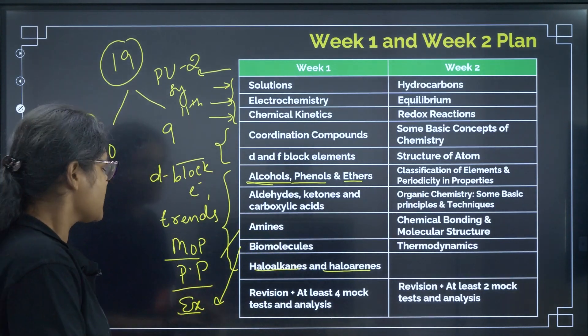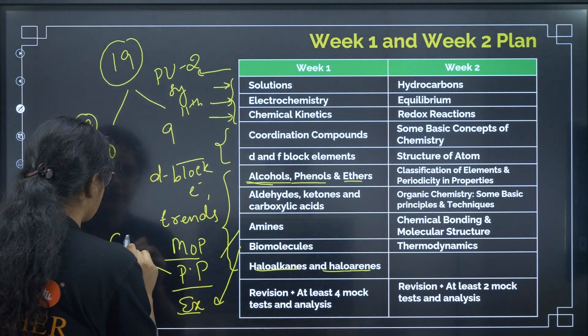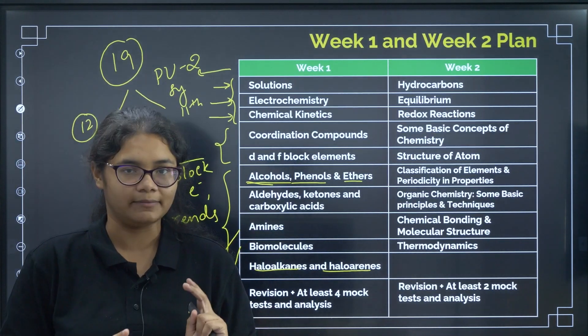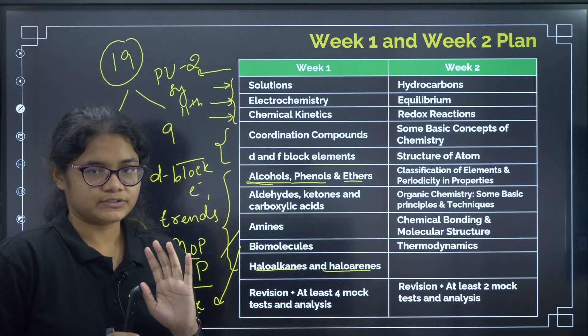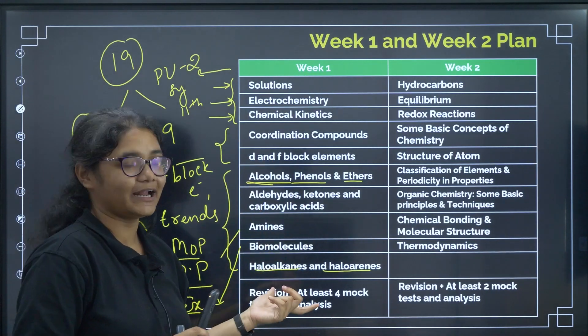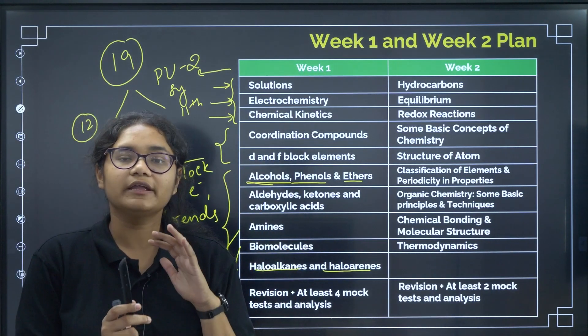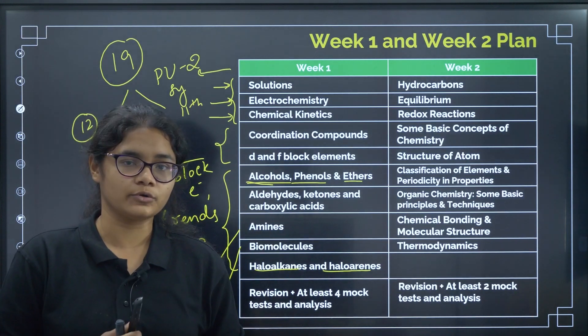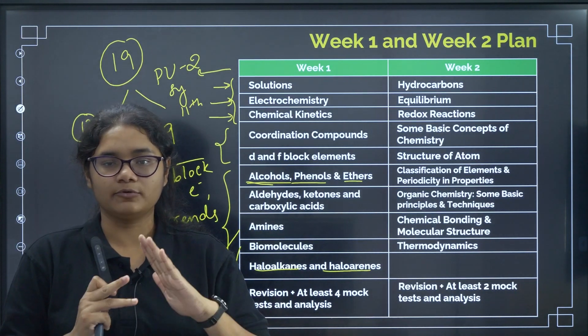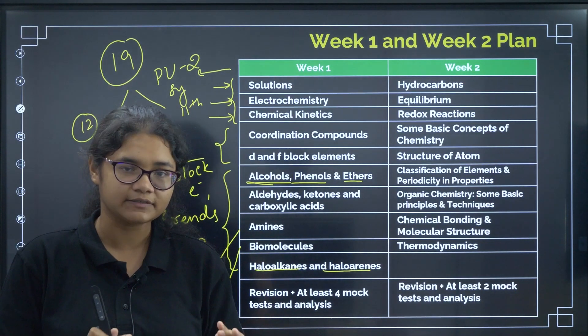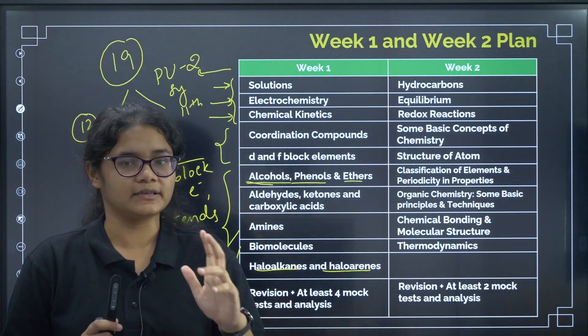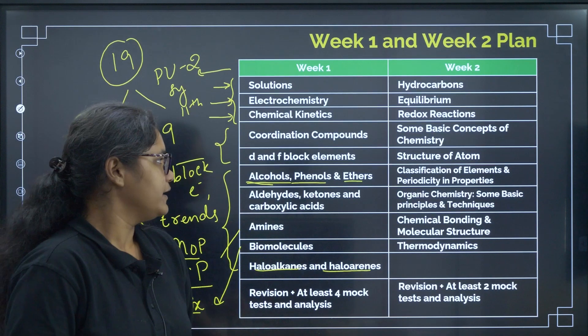Haloalkanes, same thing. Here also, you have to prepare the chemical properties. Reactions, what type of reactions they show with other elements. So, this is how you will do these chapters in the first week. You might be thinking that there are 10 chapters how to complete. It's not that you have to read the chapters now. You just have to revise them. You must be having short notes. Use short notes to revise them. Don't go for books. Don't go for any reference book. Just revise it from the notes. Key points, key formulas, anything is there, just revise them.